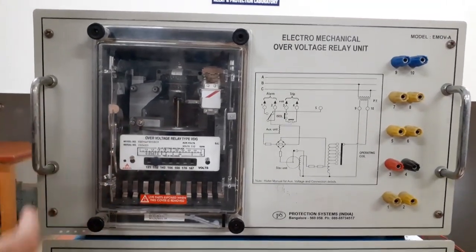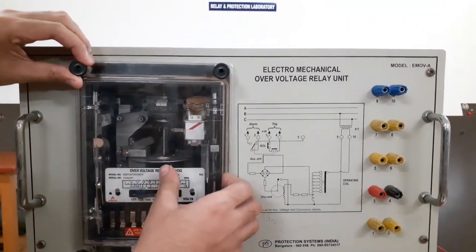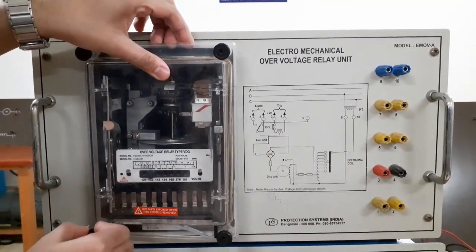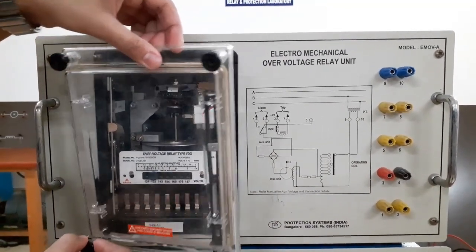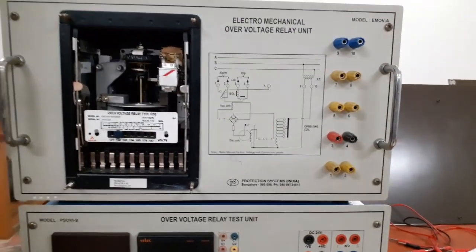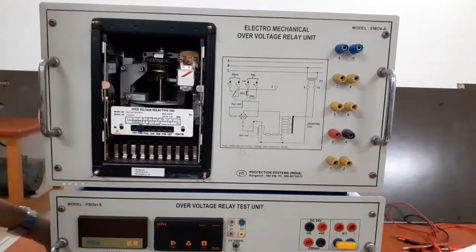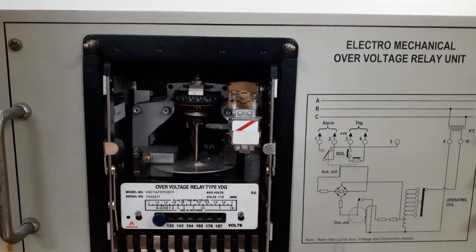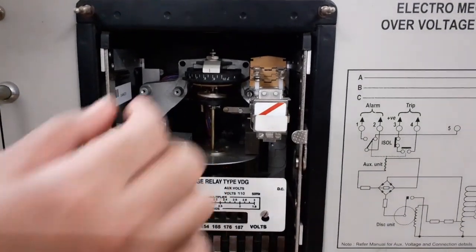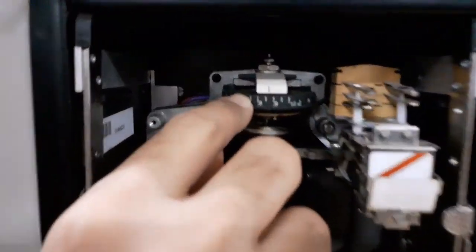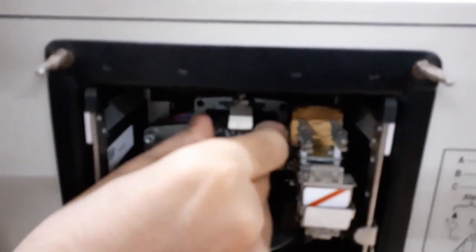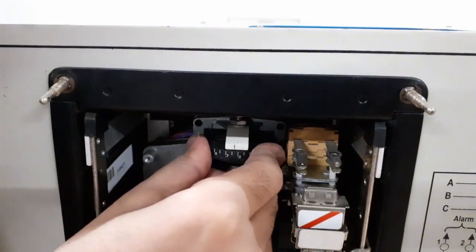First of all, we have to do the relay setting. For that purpose, we need to open this cover — it can be removable. Slowly you have to open this particular cover and place it somewhere else. Be careful while handling the devices. Now let me introduce the relay settings. Here you can observe — this is actually the TSM. By changing this particular knob, you can change the TSM, depending on your requirement.